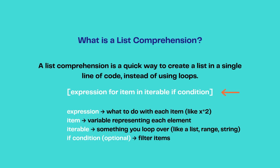The expression can be something like x multiplied by any variable, or addition, subtraction, or just an assignment of a variable. Then we have a for loop where we are iterating our items within our list, which is a iterable. We can also add an if condition, and even an if-else condition, which I'll show you when I demo with some examples.